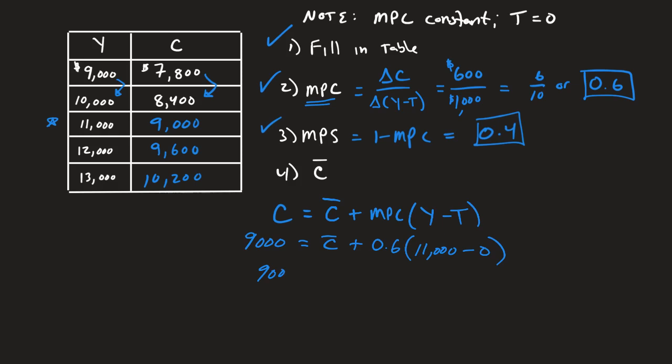So what does this mean? This means 9,000 is equal to C bar plus 0.6 times 11,000, which we continue. We see 9,000 is equal to C bar plus 6,600. So it's just 0.6 times 11,000. Feel free to use your calculator. And I'm going to subtract 6,600 from both sides. And what do I get? I take this and I get C bar is going to be equal to 2,400.